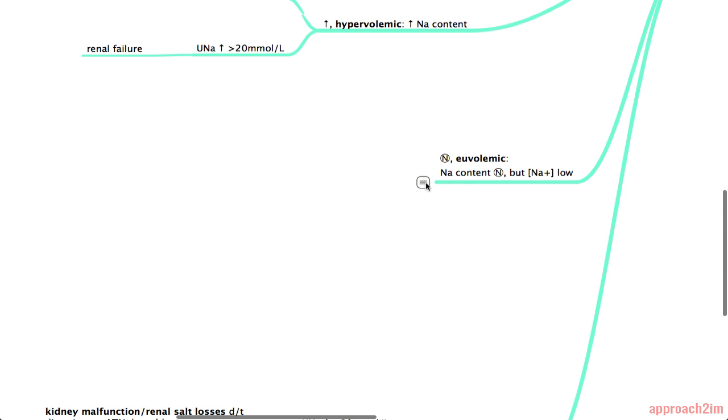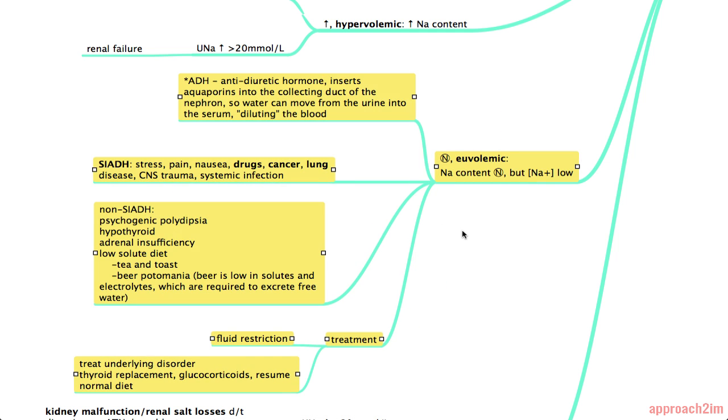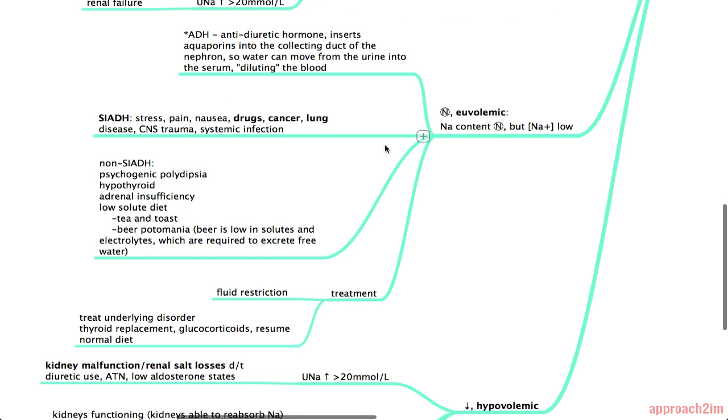And next we have the euvolemic patient. First a quick review of ADH. So ADH is a hormone, antidiuretic hormone, which inserts aquaporins into the collecting duct of the nephron. So the water can move from the urine into the sodium and the effect is it dilutes the blood. So with euvolemia, your first branch is SIADH which stands for Syndrome of Inappropriate ADH Secretion.